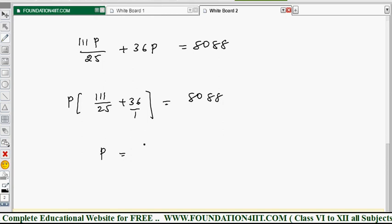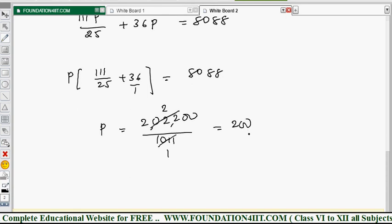That is 8088 into 25 by this both values. That I am writing 2200 by 1011. I did LCM and I took out this side. Then you can cancel this. 1011, 12 into this value, so 200. Therefore monthly installment, then P is equals to rupees 200. This LCM and take out the side. Hence the value of each monthly installment is rupees 200.